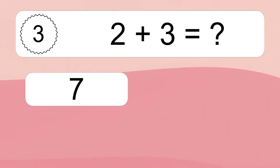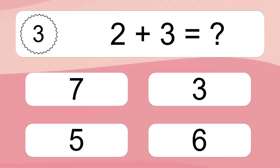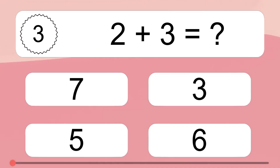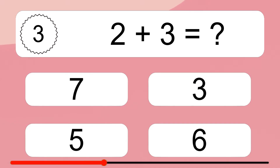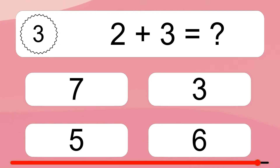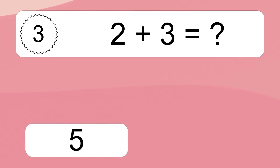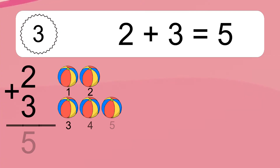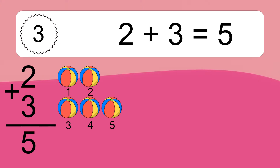2 plus 3 equals what? 2 plus 3 equals 5. Let's count it. 1, 2, 3, 4, 5.